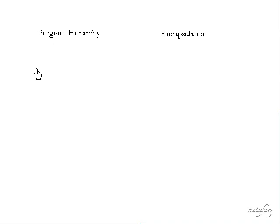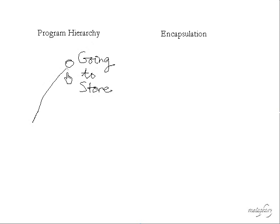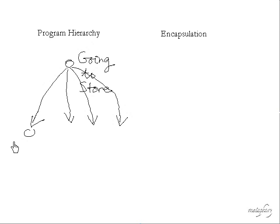A simple example: if we were going to drive to the grocery store, we might draw a tree. The root node is 'going to store,' and that requires four different things: leave the driveway, leave the neighborhood, drive the connecting roads, and park the car at the grocery store. Each of those of course has sub-processes — leaving the neighborhood might involve two separate things: first traveling north on Third Street, and then traveling west on Main.